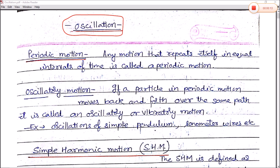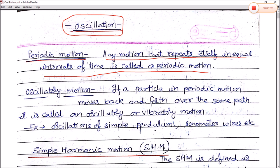What is periodic motion? Any motion that repeats itself in equal intervals of time is called a periodic motion. For example, simple harmonic motion and a simple pendulum — it oscillates about its mean position. This motion is periodic motion.